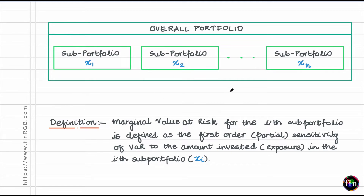How you define each of these sub-portfolios depends entirely on the context. A sub-portfolio can be an asset class — for example, equities, fixed income, commodities, etc. A sub-portfolio can be a division in the firm — for example, retail, lending and borrowing, or securities.